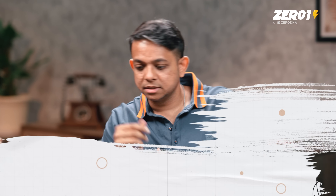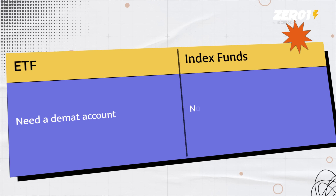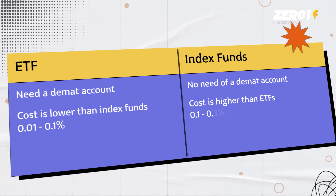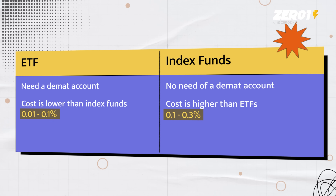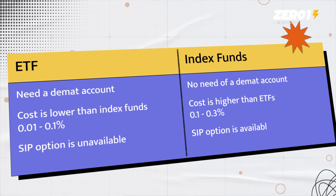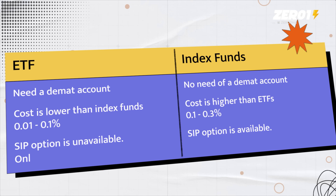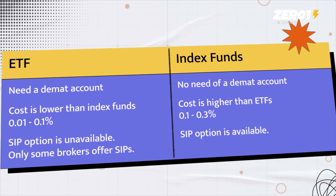There are a few more differences. One is that you'll need a DMAT account for ETFs but not for index funds. The other is cost — an ETF is actually cheaper than even an index fund, with expense ratios ranging from 0.01% versus 0.01% to 0.3% for index funds. And finally, you can't easily do a SIP on an ETF because it trades on the stock exchange — only a few brokers in India provide SIP options for ETFs. Otherwise you have to log into your trading account and place the order every month manually.